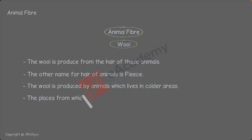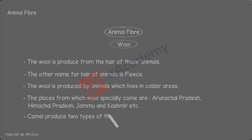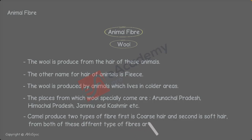The places from which wool especially comes are Arunachal Pradesh, Himachal Pradesh, and Jammu and Kashmir. Not only from colder climates, but also from desert areas, wool is produced from animals like the camel. The camel produces two types of fiber: first, coarse hair, and second, soft hair. From both of these, different fibers are produced.